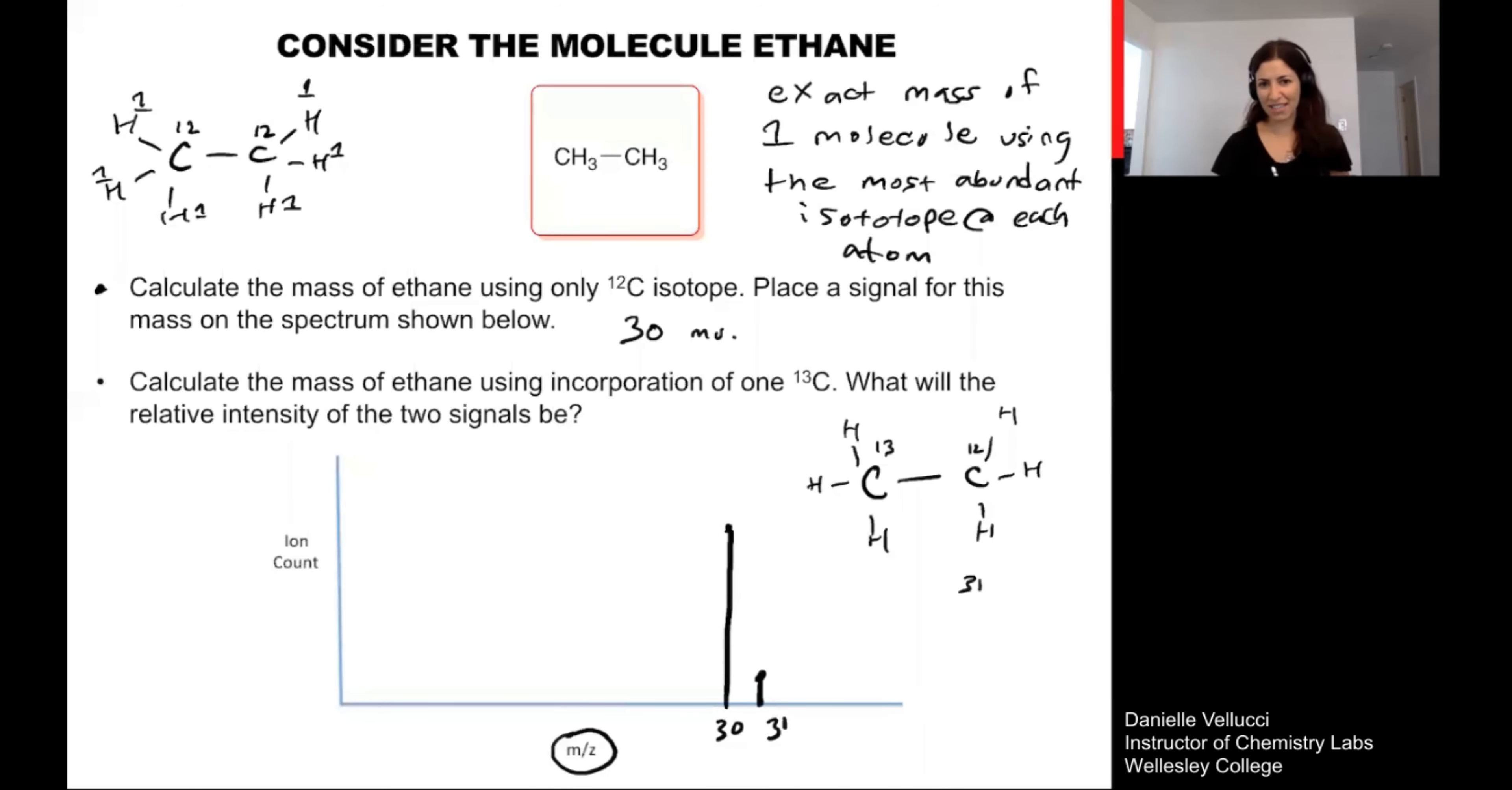Sometimes at this point, students will ask, what about 32? Could I have the scenario where I have a C13 on each of the two carbons? When you look at the probability of that, it actually becomes quite small. You only have a 1% likelihood of incorporation of C13 at each individual carbon. So when you consider the probability of a molecule having two C13s adjacent to each other, that is much less. So we tend to see the incorporation of one C13 into the molecule. And we see that as what we call the M plus one.